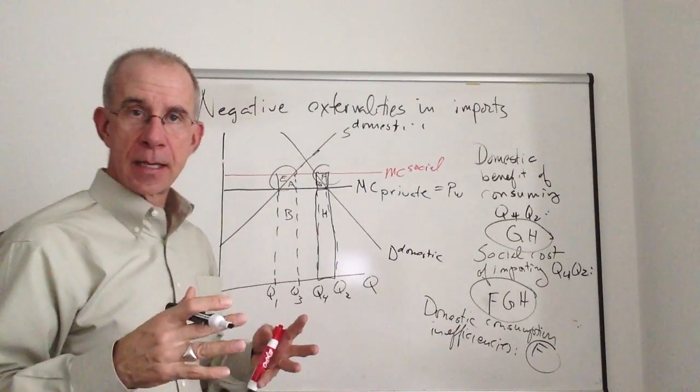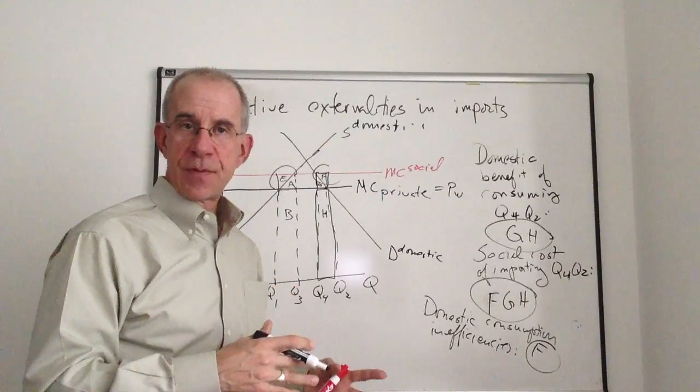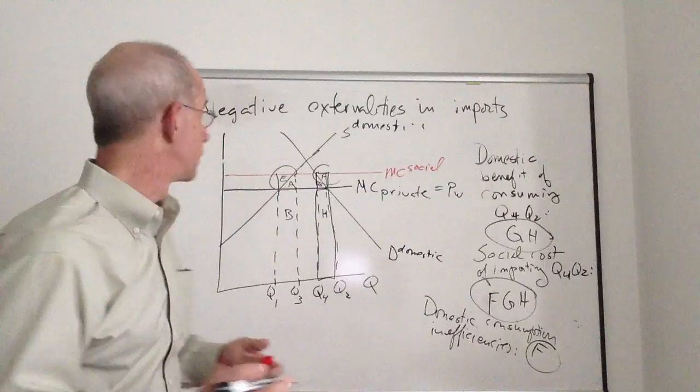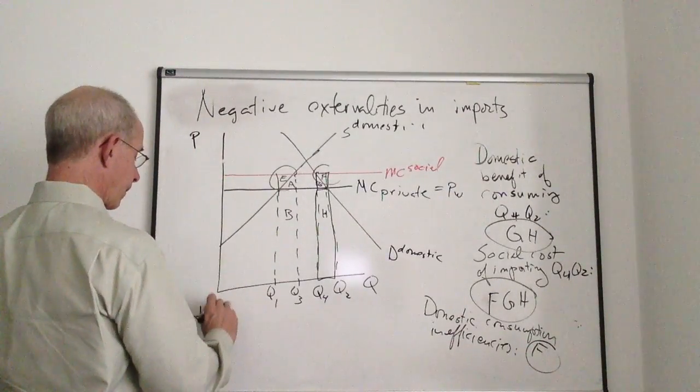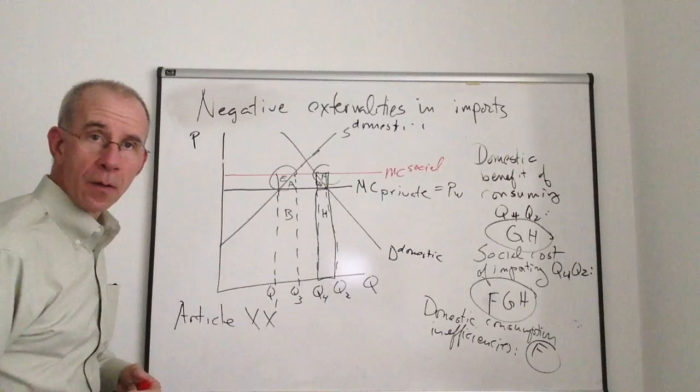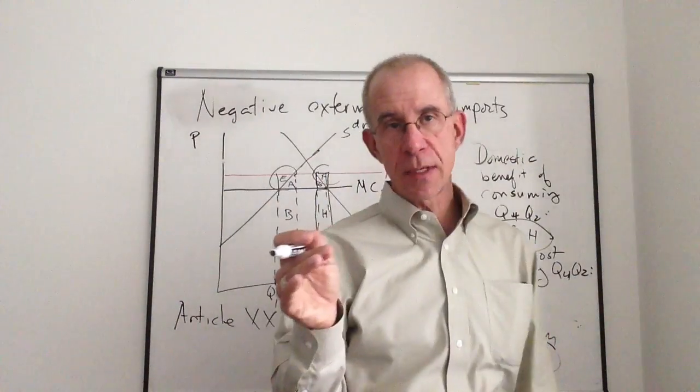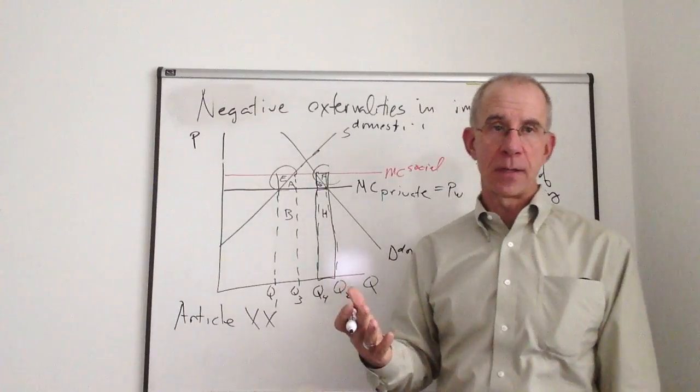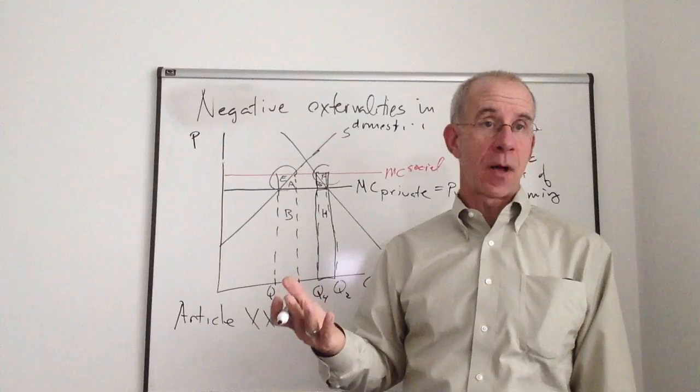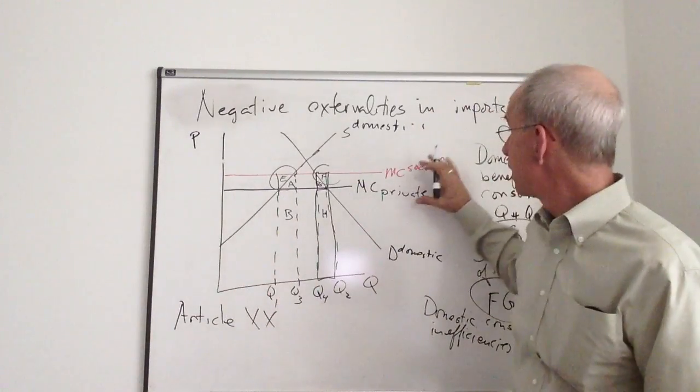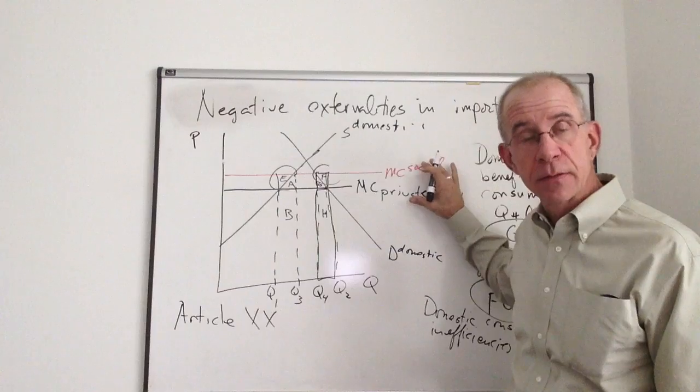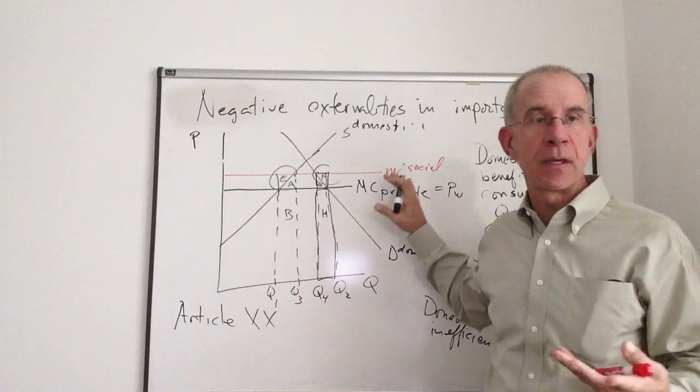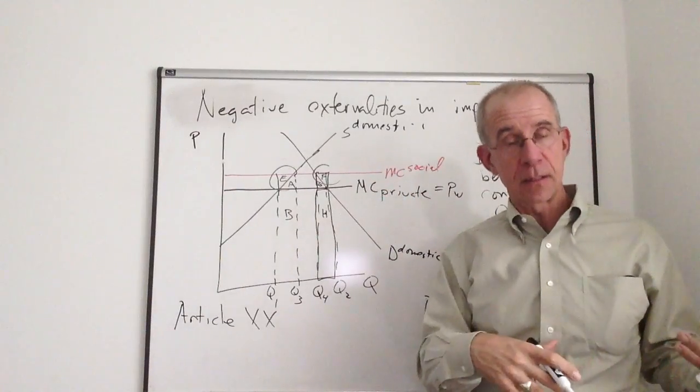Now, this lies behind some of the basic, what are called general exceptions of the GATT. Countries can increase their restrictions on imported goods if they cause, for example, problems to human health. So if the imported good was a dangerous product,